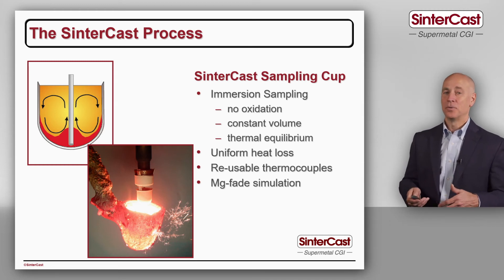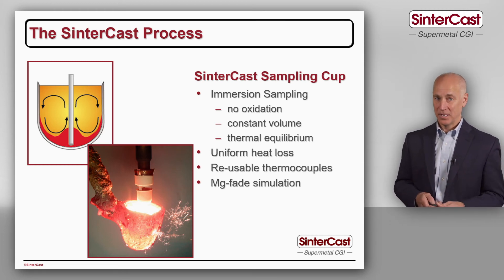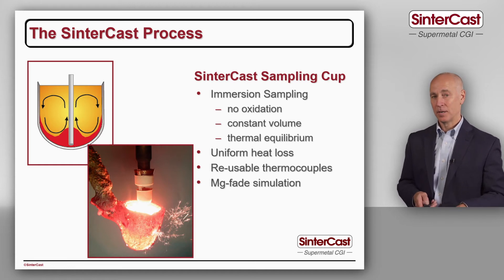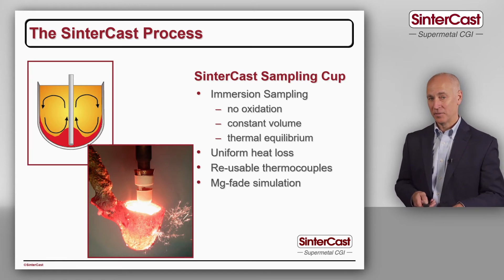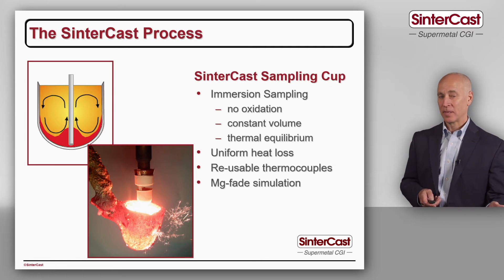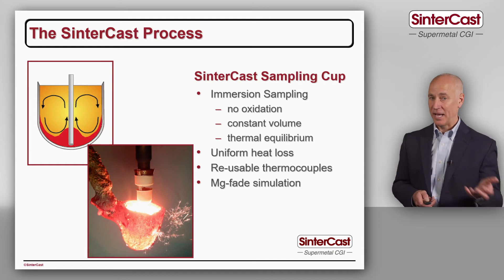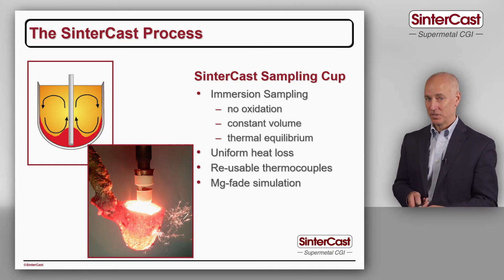That reaction effectively tells us how the iron will be 15 minutes later. So the thermocouple in the center of the cup tells us how the iron is now, and the thermocouple at the bottom of the cup tells us how the iron will be at the end of production. And if we start to see flake graphite growing in the bottom thermocouple reading, we know that we have to add some magnesium before the start of production.